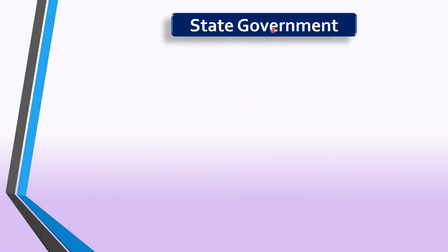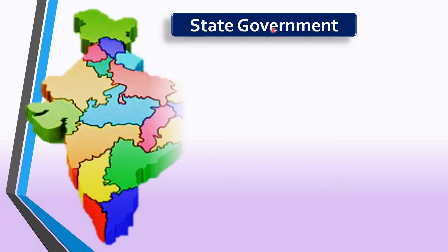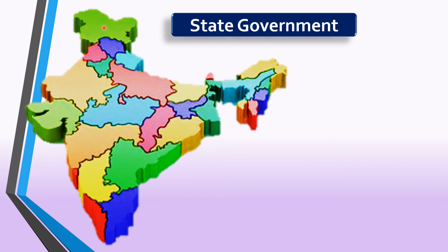Now let's see state government — how government is formed in the state. Till now, children, we were talking about the whole country, which means we were talking about the central government. But now we will talk about state government.